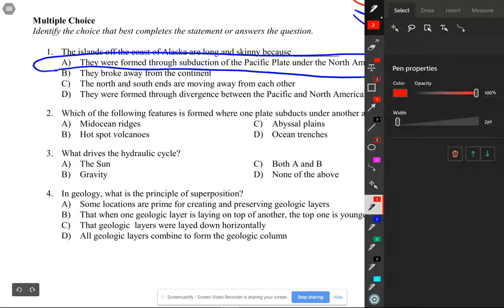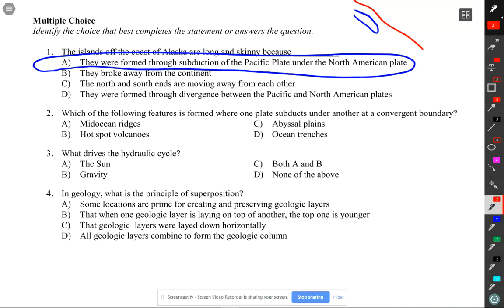Which of the following features is formed where one plate subducts under another at a convergent boundary? We just had subduction. What other feature occurs at that location? D, the ocean trenches - things like the Marianas Trench or the Tonga Trench. Those are formed because you had the material coming down and pulling this down with it and making a trench.